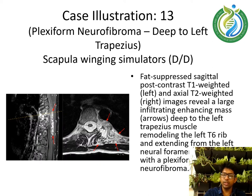Case illustration 13 — Plexiform Neurofibroma deep to the left trapezius. Fat-suppressed sagittal post-contrast T1-weighted and axial T2-weighted images reveal a large infiltrating enhancing mass, indicated with an arrow, deep to the left trapezius muscle, remodeling the left T6 rib and extending from the left neural foramen, consistent with a plexiform neurofibroma.